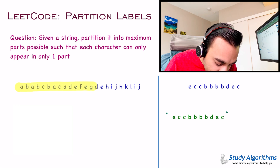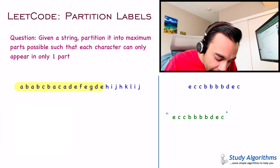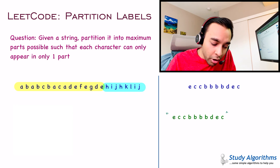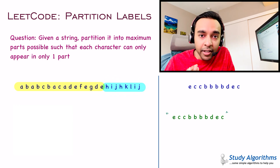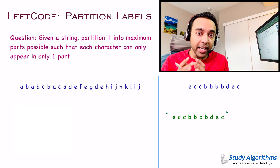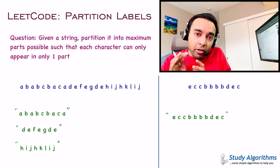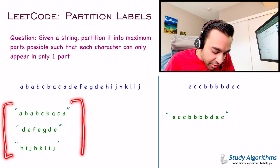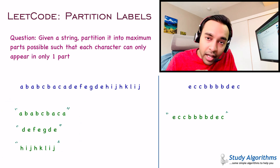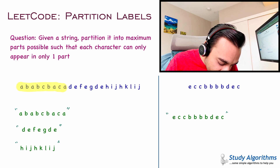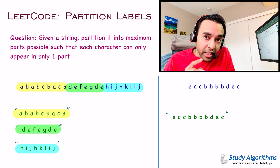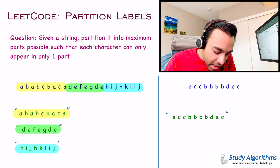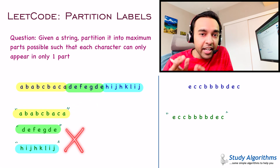Let's say I make a partition like this — this is my first partition and this is my second partition. You can see that any character appearing in the first partition cannot be found in the second partition. Based on this, you have to find the maximum number of partitions. For this particular test case, the maximum number of partitions is 3. The first partition starts at A and ends at A, the next starts at D and ends at E, and the third starts at H and goes all the way to the end. Notice that all of these partitions have distinct characters.